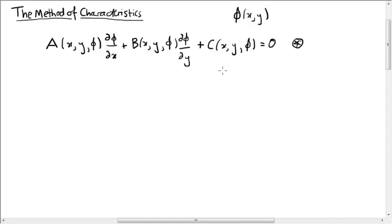I want to explain the method of characteristics, which is a technique for solving partial differential equations like this one. This is a first order partial differential equation. It's quasi-linear, which means that it's of the form A times d phi by dx plus B times d phi by dy plus C equals 0.